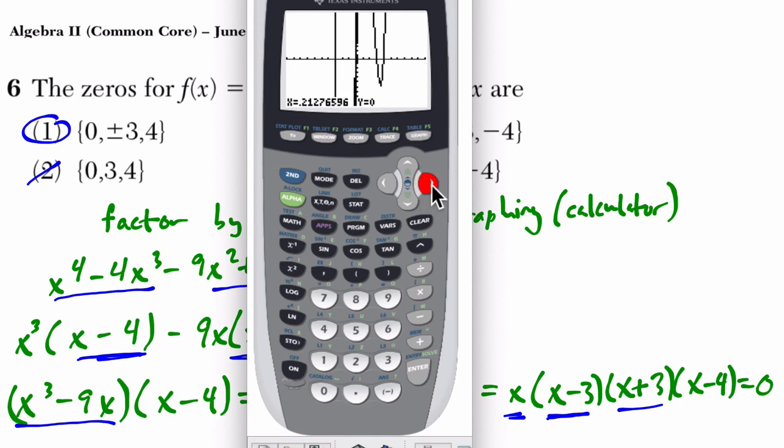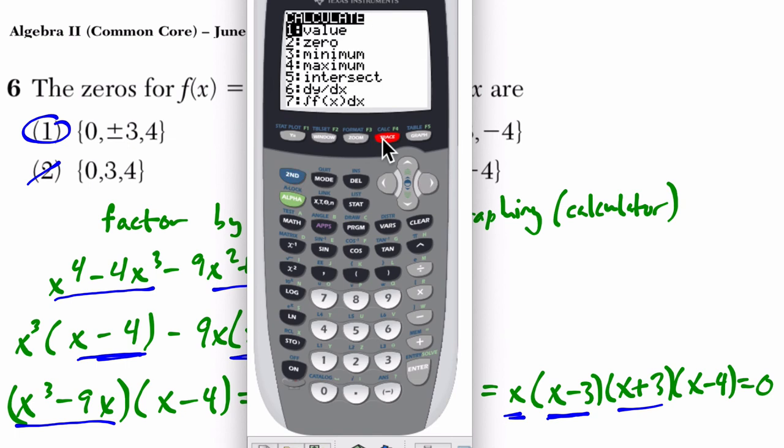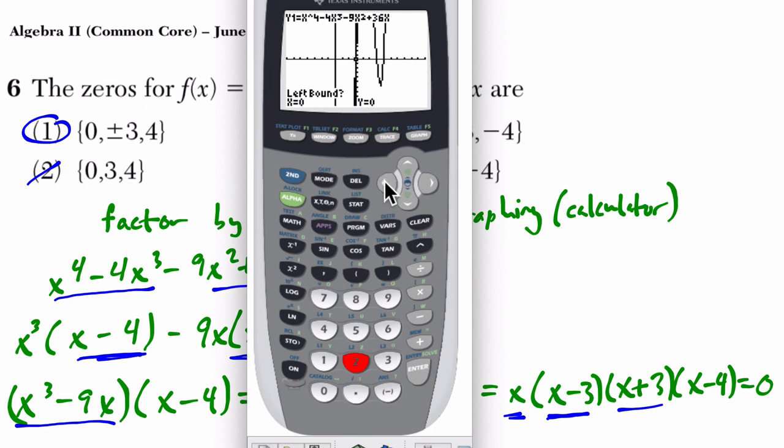You want to know a zero. So how do you do that in the graph? Well, you hit second, trace. And the very second thing here, I almost said first thing. The very first thing is zero. So now it's going to ask me for a point to the left, essentially, of my zero. And it's kind of hard to see. I'm like, all right, well, let me just go over here. Keep scrolling, because you can scroll along. So this is to the left of one of my zeros, a little bit closer.